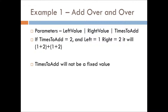So let's go straight into the examples. This is something I just thought of — 'add over and over.' Basically you pass in two values and then the number of times to add them. It's sort of like multiplication, except it's not — although it could be, since one plus two is three, and three plus three is three times two. Notice that 'times to add' will not be a fixed value in this case.